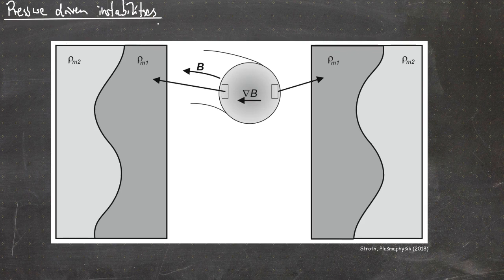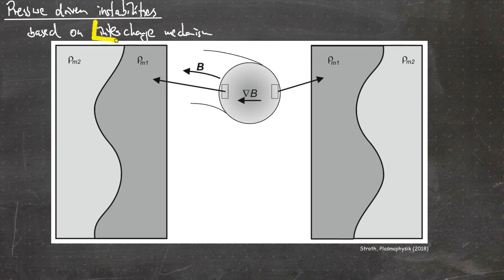Pressure-driven instabilities are based on the interchange mechanism. The interchange mechanism is what we will explain using the picture included here.